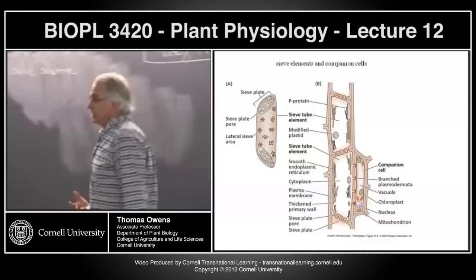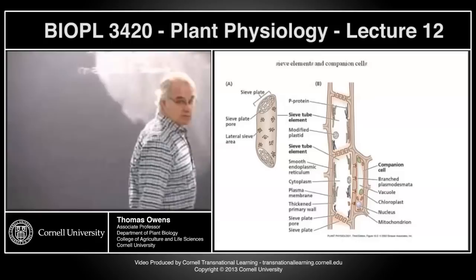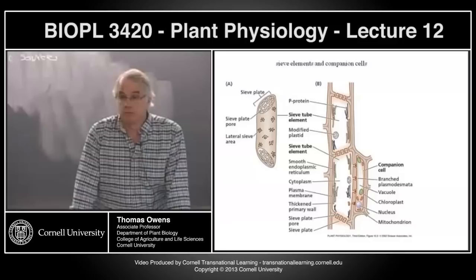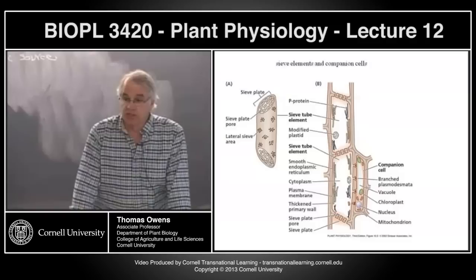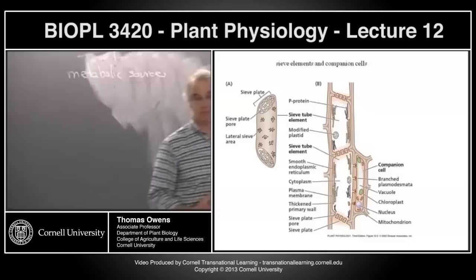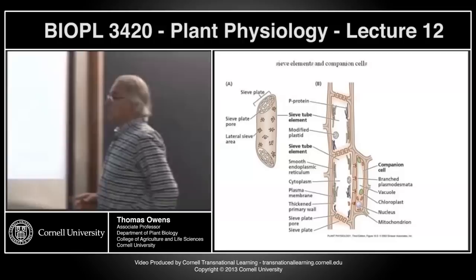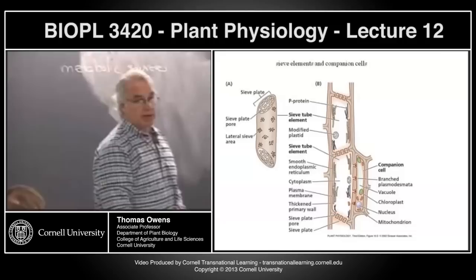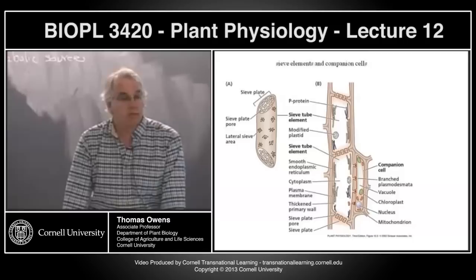Companion cells and their associated sieve elements are always connected by a large network of plasmodesmata. One thing you should be thinking about: the xylem cells are dead with no plasma membrane, but the phloem cells do have a plasma membrane. The presence of a plasma membrane should bring to mind the question of transport from one sieve element to the next — if there are plasma membranes, that's going to be pretty limiting to transport, since phloem transport can happen at the same rates as xylem transport — meters per hour.